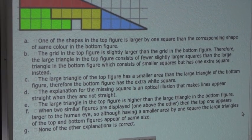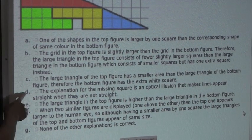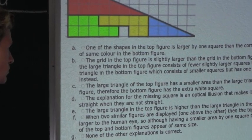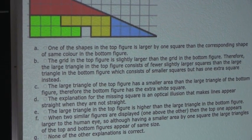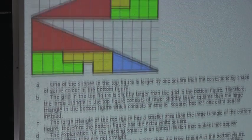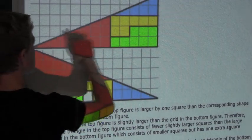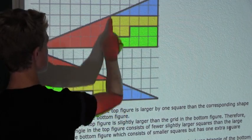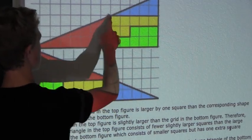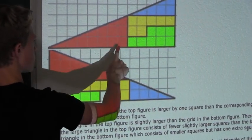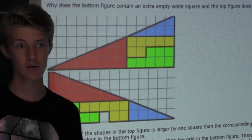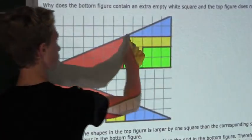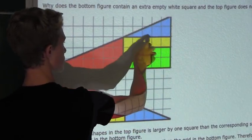Option G says none of the other explanations is correct. The only two possibilities remaining are option D or option G. Let's check option D more carefully. We know the outer lines of the figures are straight. Let's check the slope of the interior diagonal line: it goes up 3 and over 8, giving a slope of 3/8. For the other segment of that line, it goes up 2 and over 5, giving a slope of 2/5.